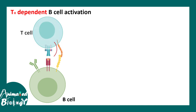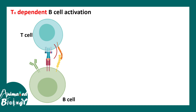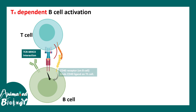The antigen is displayed to the T-helper cell. T-helper cell interacts with the B-cell at several levels. The TCR and MHC-2 interaction leads to the first signal for B-cell activation, and the second signal comes from the CD40 receptor on the B-cell and CD40 ligand on the T-helper cell. These two interactions give rise to the necessary signals for B-cell activation.